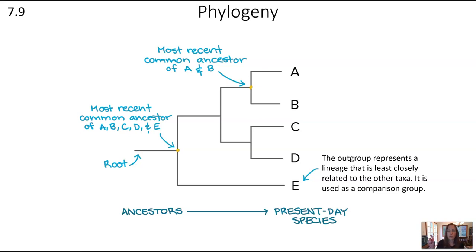Most recent ancestors are shown where two groups come together at a node. The most recent ancestor of A and B is shown in the upper-right node, whereas closer to the root you can see the most recent ancestor of A, B, C, D, and E. Another term to know is outgroup — the lineage least closely related to the other taxa, used as a comparison group. If there are traits in common between E and also A, B, C, D, those are very ancestral traits found all the way back at that far-away common ancestor.